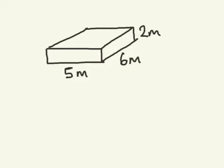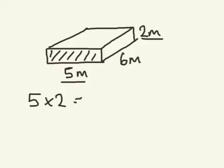The first way is to find the area of the front face, this bit here that I'm now shading in. To find the area of this face, you multiply 5 by 2 because it is 2 meters up and 5 meters across. So 5 times 2, which gives me 10.